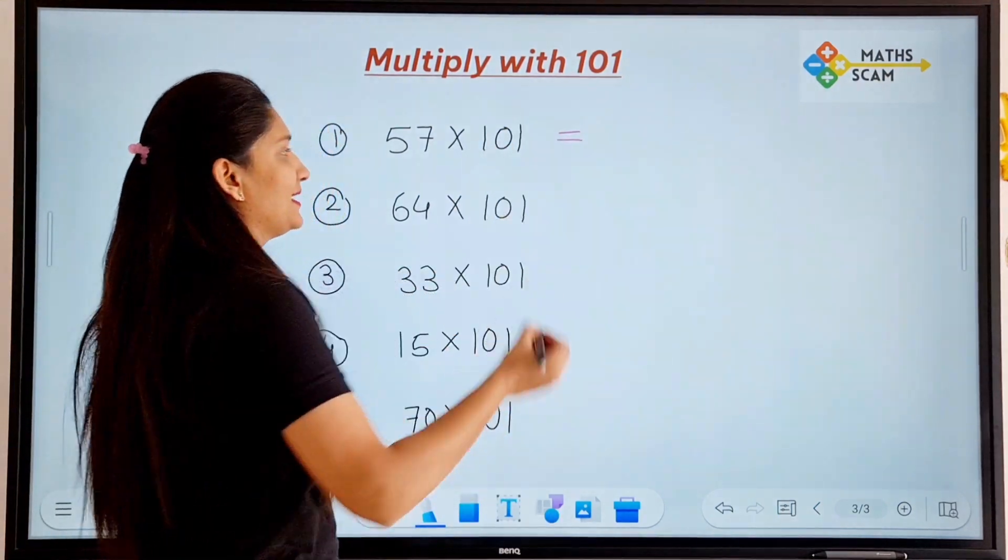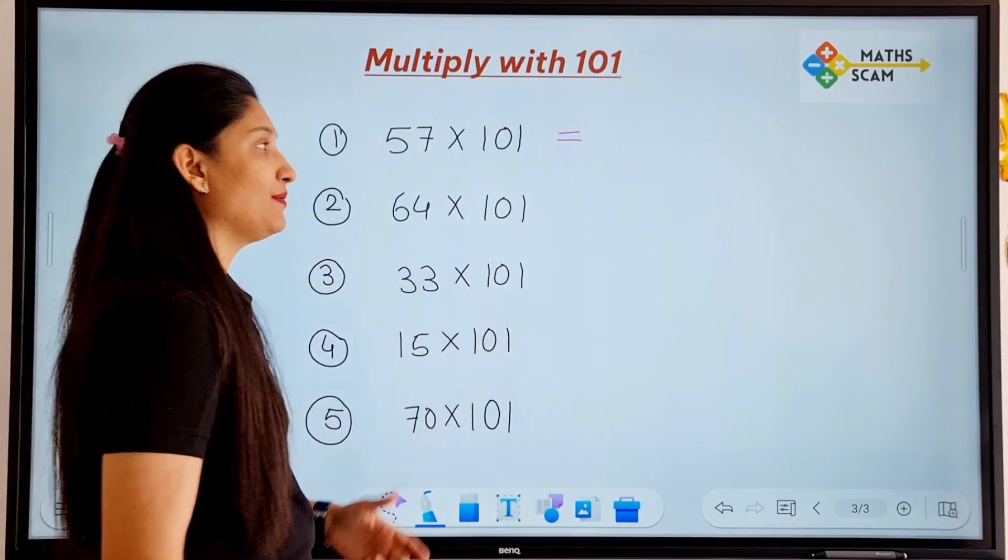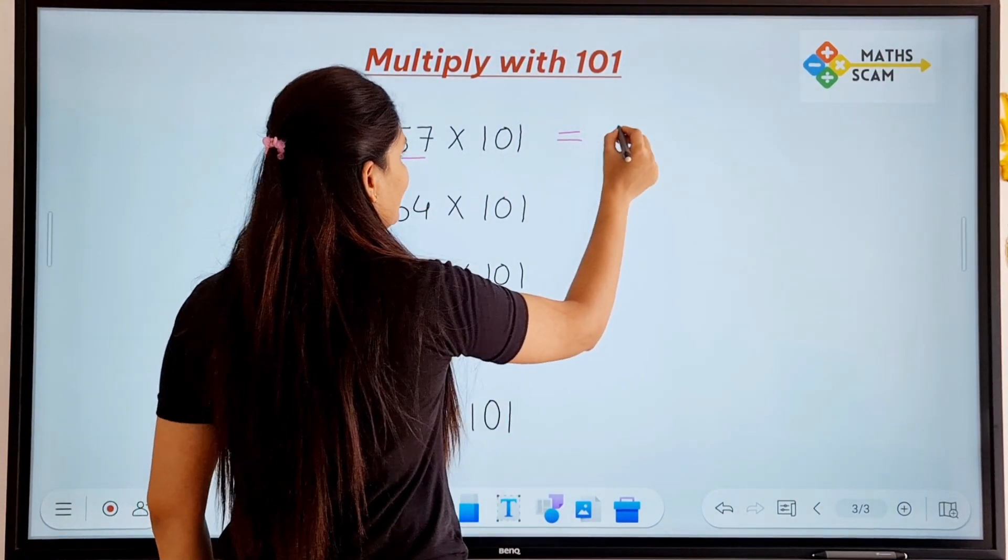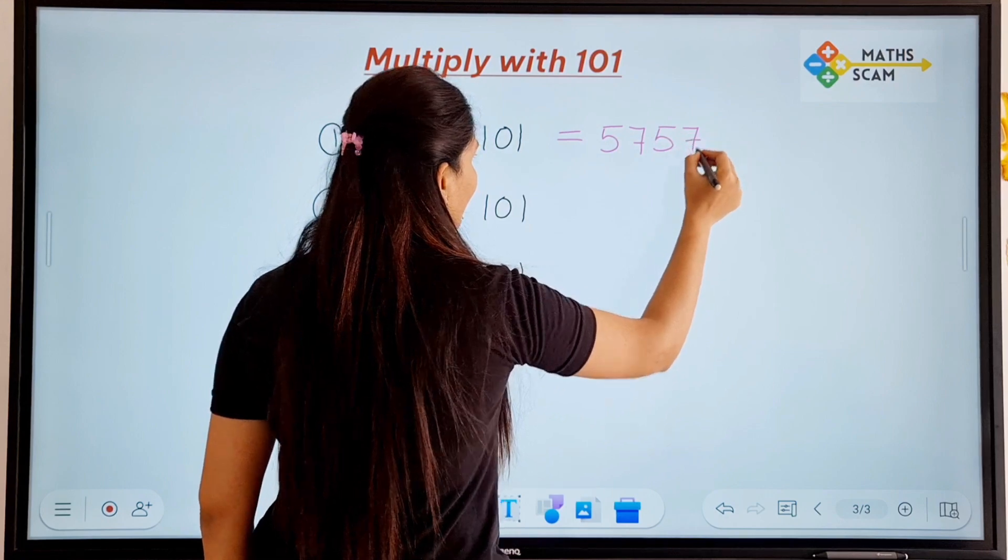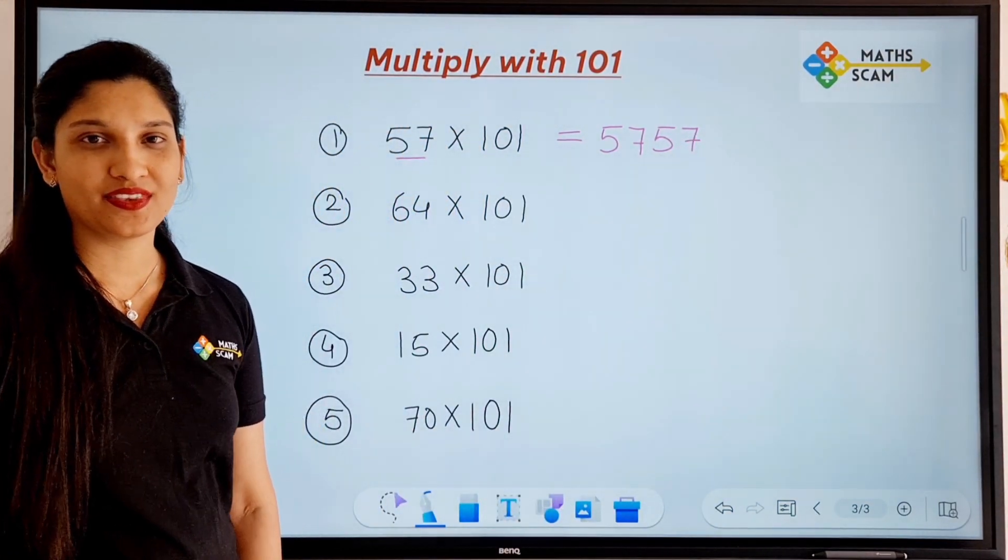the first question is 57 times 101. So, the same thing you have to write down 2 times. That is 57, 57. So, answer is 5,757. Okay?